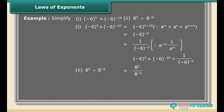Example: 8 raised to the power 5 divided by 8 raised to the power minus 6 equals 8⁵ upon 8^(−6) = 8^(5−(−6)) = 8^(5+6) = 8^11, since A^M divided by A^N equals A^(M−N).